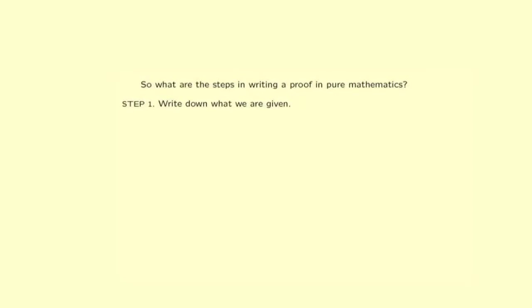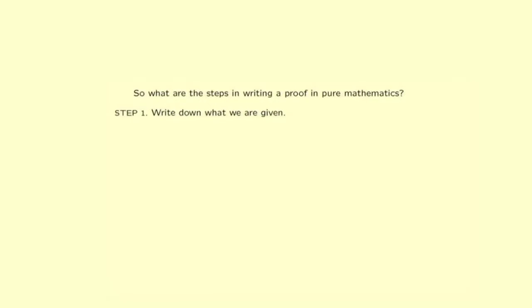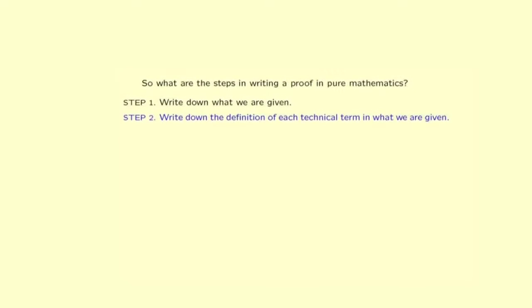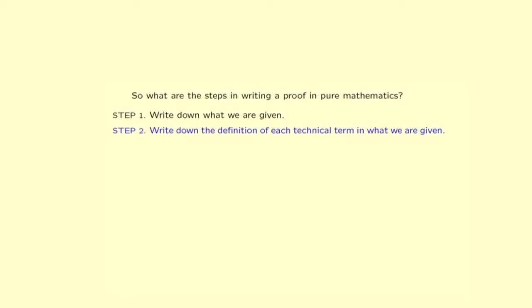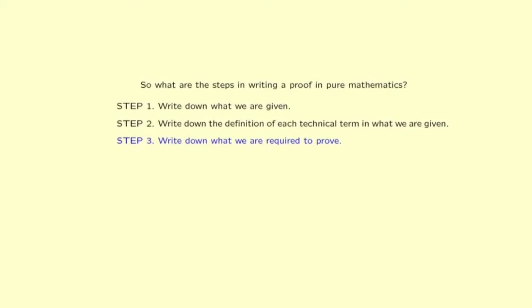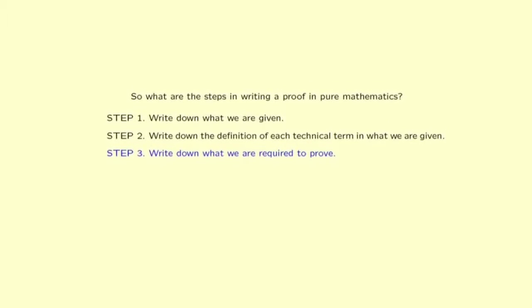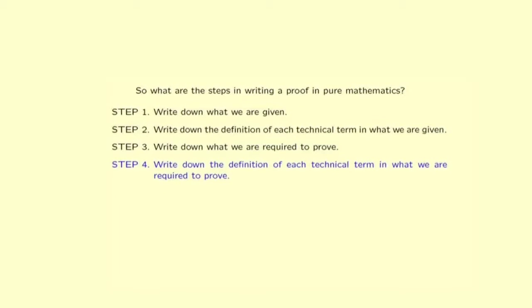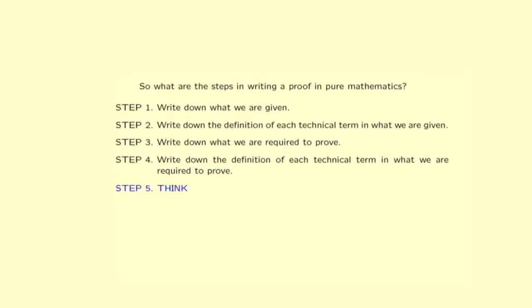So let us now recall what are the steps in writing a proof in pure mathematics. Step 1: Write down what we are given. Step 2: Write down the definition of each technical term in what we are given. Step 3: Write down what we are required to prove. Step 4: Write down the definition of each technical term in what we are required to prove. And Step 5: Think.